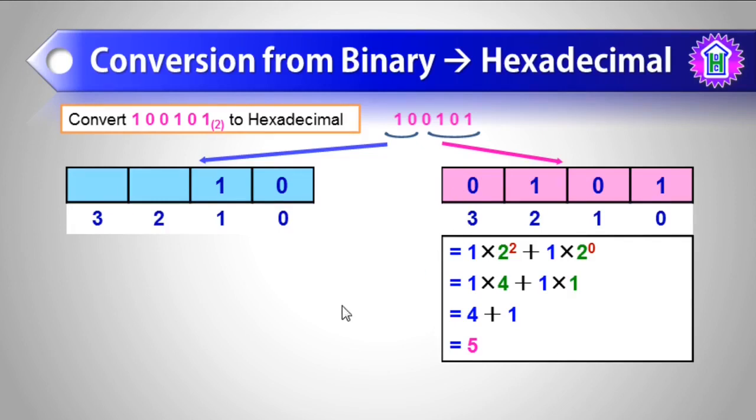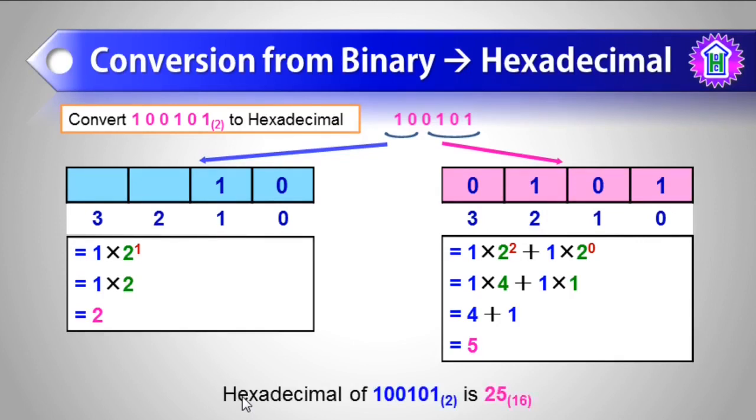Then let us calculate the next one. It will be calculated as 1 times 2 to the power, the position which is 1, and it will be calculated as 2. So hexadecimal of 100101 is 25.